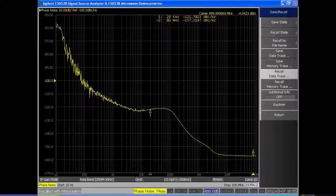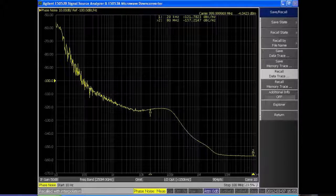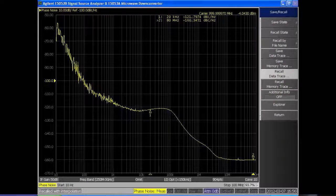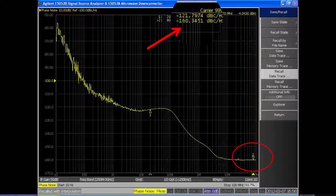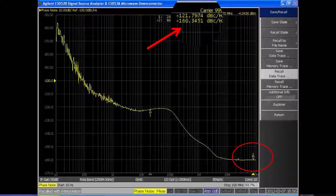Now when I turn on the signal to noise mode, this is a power option that's under the amplitude key. You will see about a 3 dB improvement at the broadband noise and we get down to minus 160 dBc per hertz.